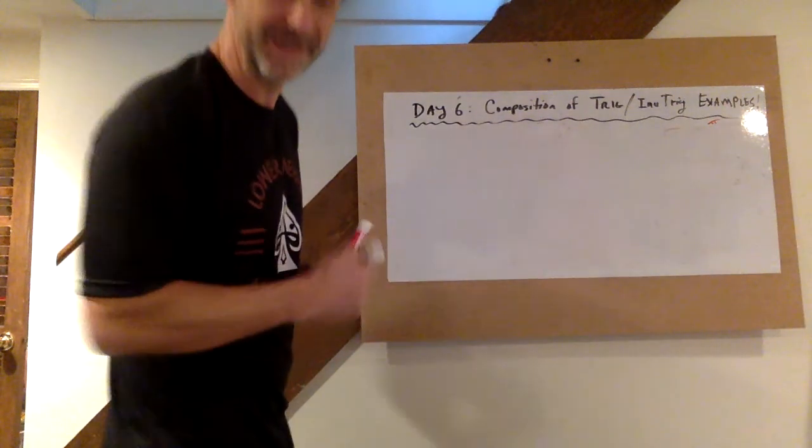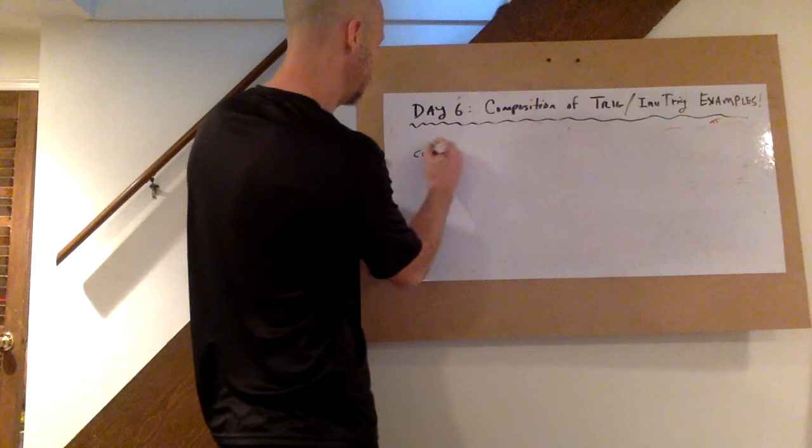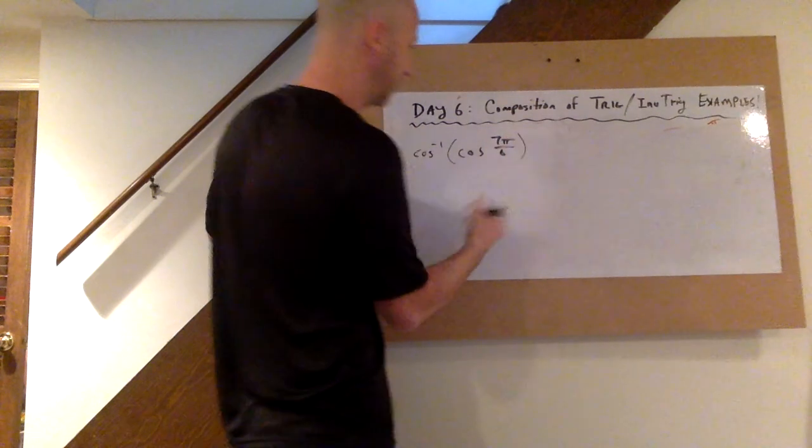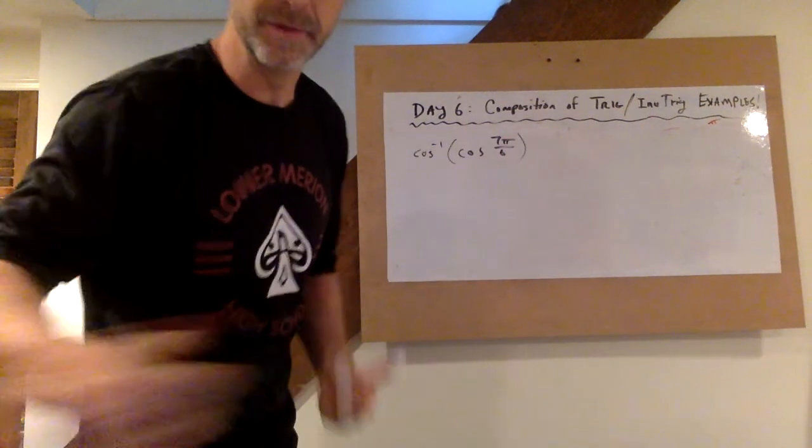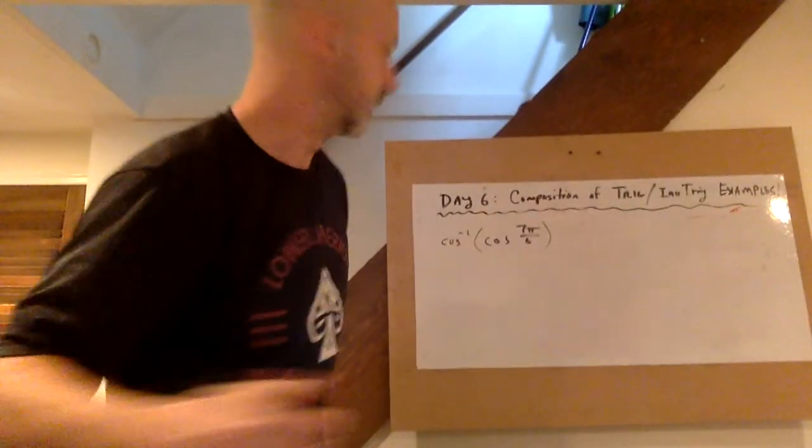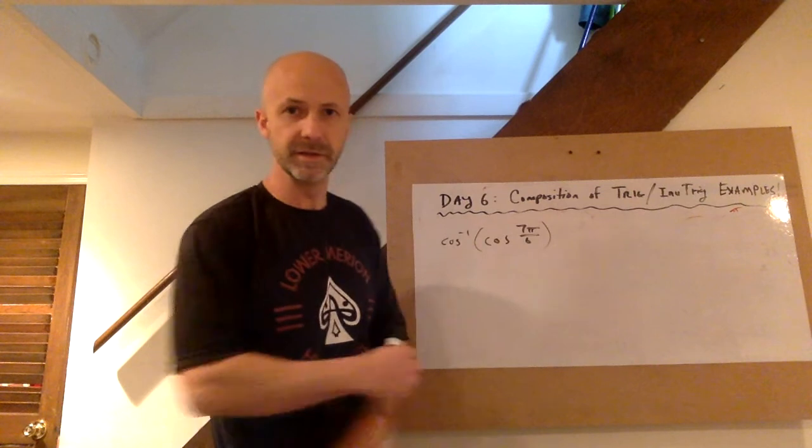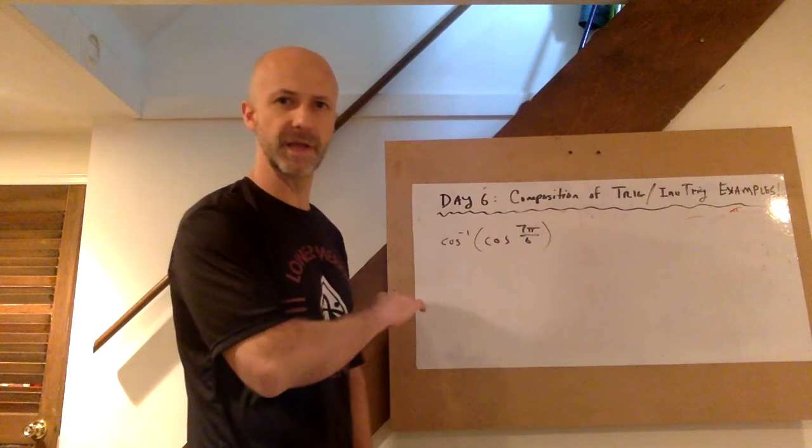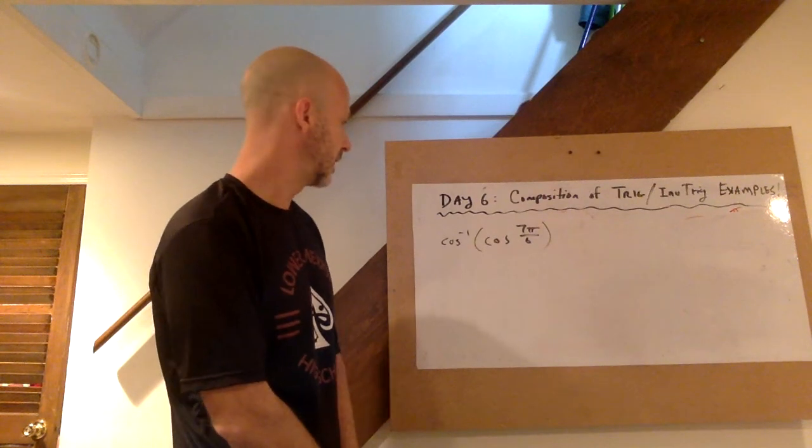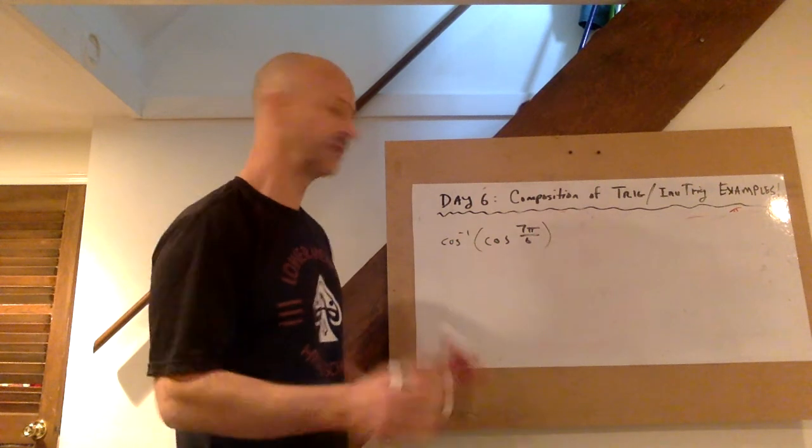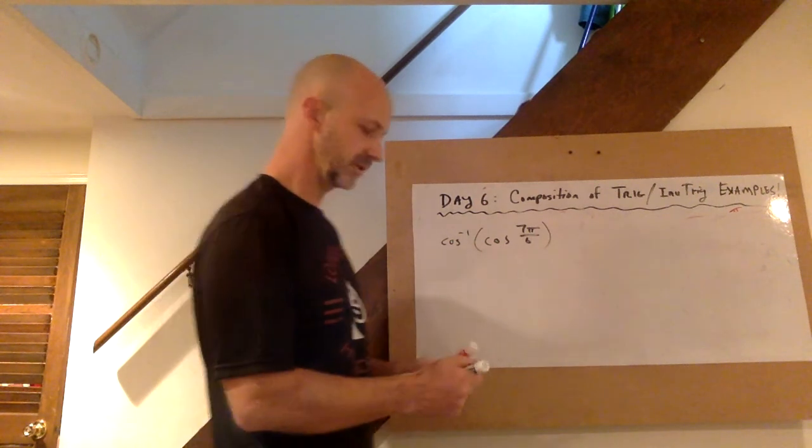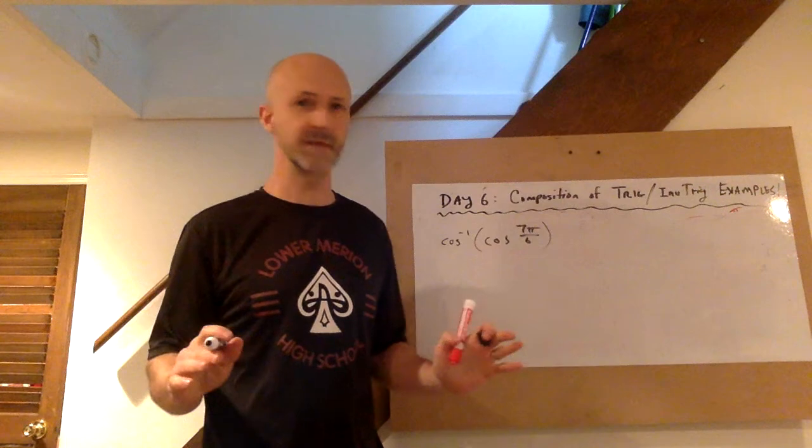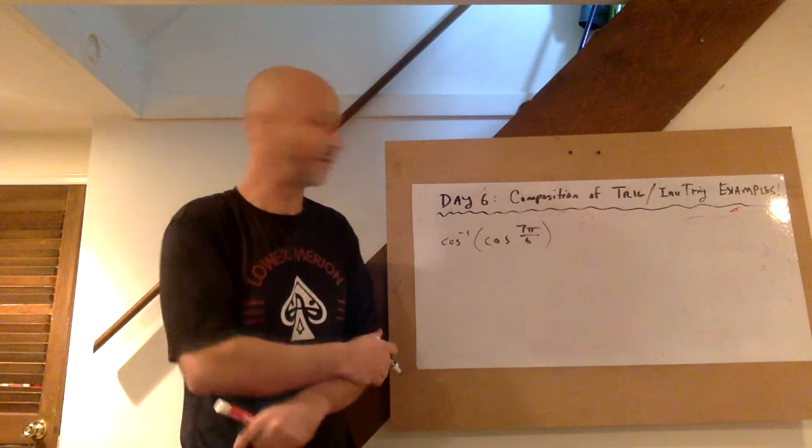A couple more examples. What about cosine inverse on the outside of cosine of 7 pi over 6? I picked 7 pi over 6, a unit circle value, but there's actually really nothing special about picking a unit circle value. You could do this with any old angle that I give you. So here's the idea. The answer is not 7 pi over 6. And the reason I know that the answer is not 7 pi over 6 is cosine inverse has a range from 0 to pi. So the only answers that it can give are answers from 0 to pi, and 7 pi over 6 is not on that interval.